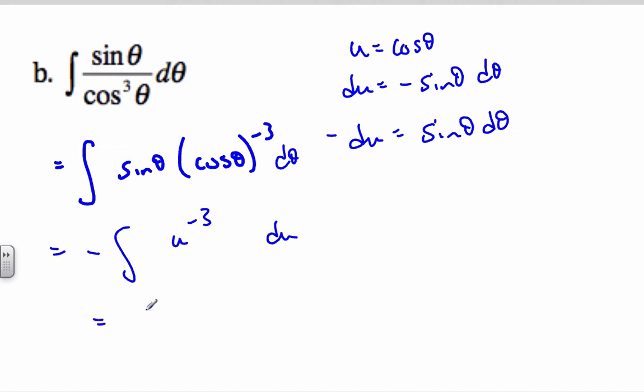So now actually taking the integral, I'm going to add 1 to this exponent. I add 1 as negative 2. Here's my negative, and I'm going to divide by the reciprocal plus C. And so I get 1 half cosine theta to the minus 2 plus C is my integral.